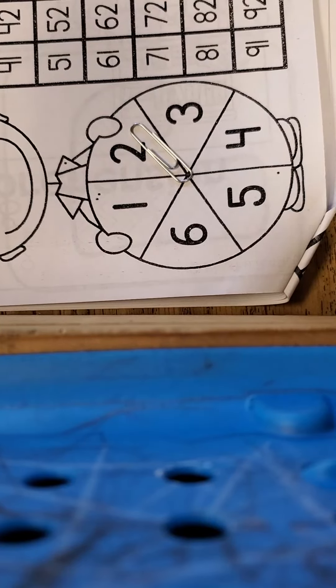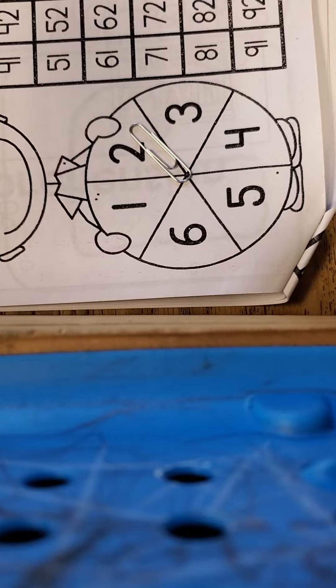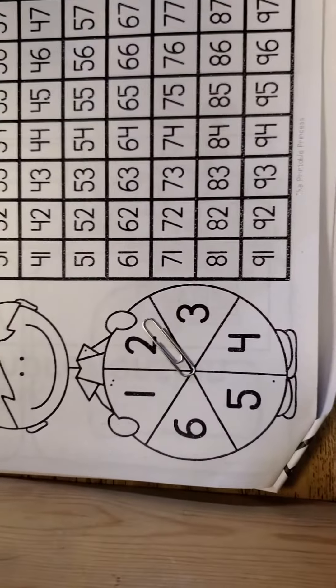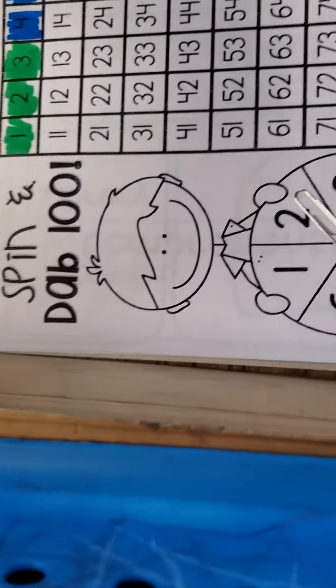...use a different color this time though, so I can make a rainbow. Alright, so I need to color two more numbers: one, two. Alright, so keep spinning, keep coloring till you get all the way to 100. Good luck, Declin!